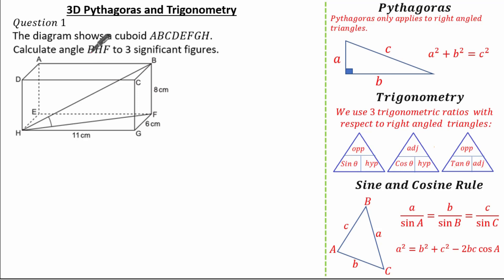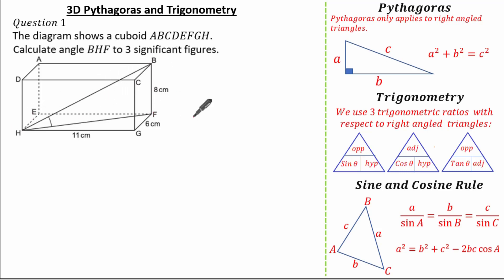The diagram shows a cuboid ABCDEFGH, and we're asked to find the angle BHF to three significant figures. This is a nice past exam question because it identifies the right-angled triangle for you. Importantly, whenever you're looking at 3D Pythagoras and Trigonometry questions, there's always more than one way to find the solution. I'm just going to show you the most straightforward method.